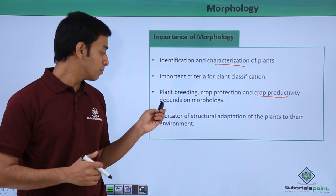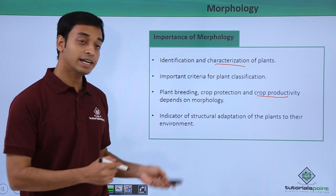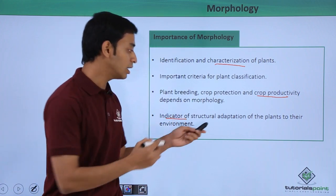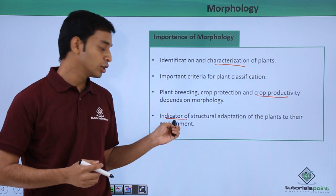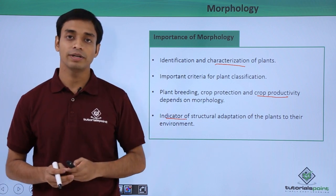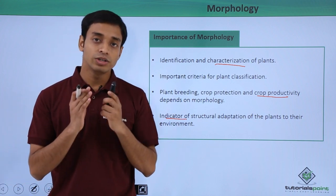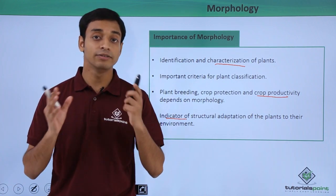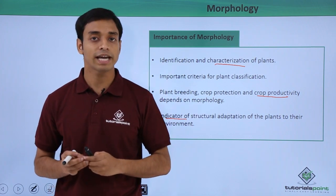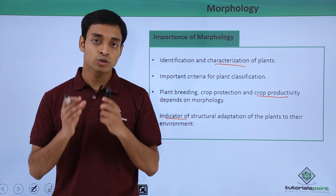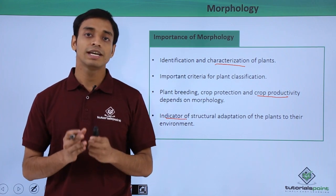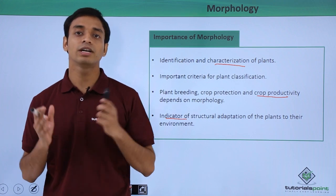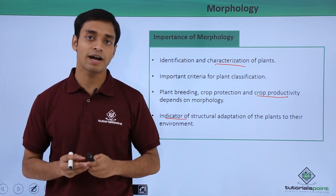Very importantly, morphology is an indicator of the structural adaptations of plants to their environment. Different plants in different environments have different morphological characteristics, making morphology a very good indicator of the environment in which plants are residing.